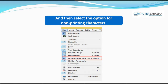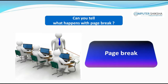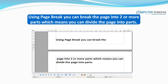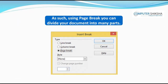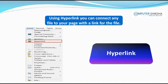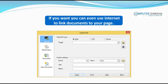The non-printing characters will get removed from your sheet. Using page break, you can break the page into two or more parts, which means you can divide your document into many parts. Using hyperlink, you can connect any file to your page with a link. Using such links, you can join many files to your page and work together on them. You can even use the internet to link documents to your page.